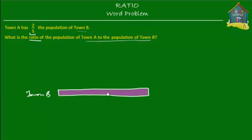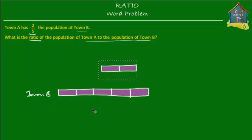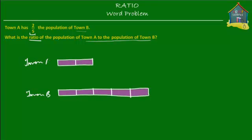Part of this whole is the population of Town A, and it's exactly two out of five parts. So if this population is divided into five equal parts, then the population of Town A would be equal to two out of those five parts. Let's suppose these are the five parts of the whole — then two out of those five parts would be the population of Town A.